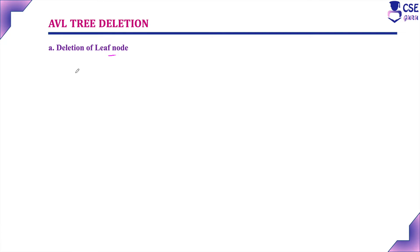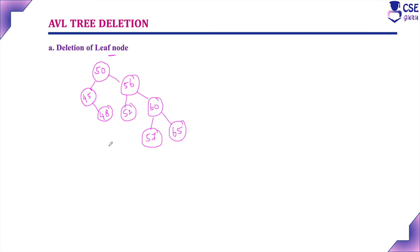Consider this example AVL tree. An AVL tree is a balanced binary search tree where both the balance factor condition and the binary search tree property must be satisfied. Checking the balance factors: all leaf nodes are 0; internal nodes are -1 or 0; the balance factors are 0, -1, and so on. Since all balance factors are 0, +1, or -1, this is a valid AVL tree.